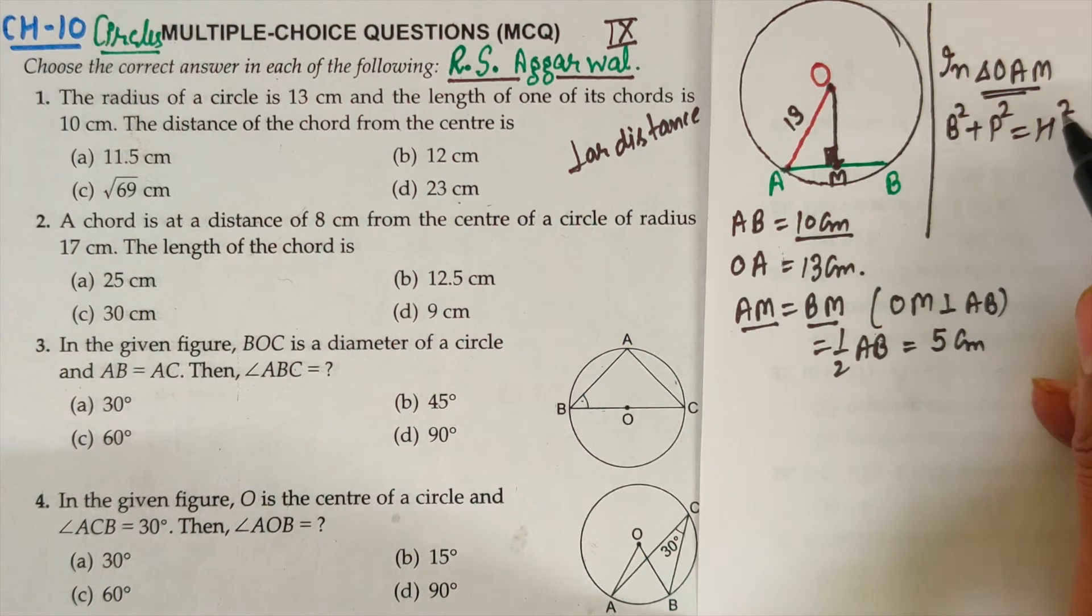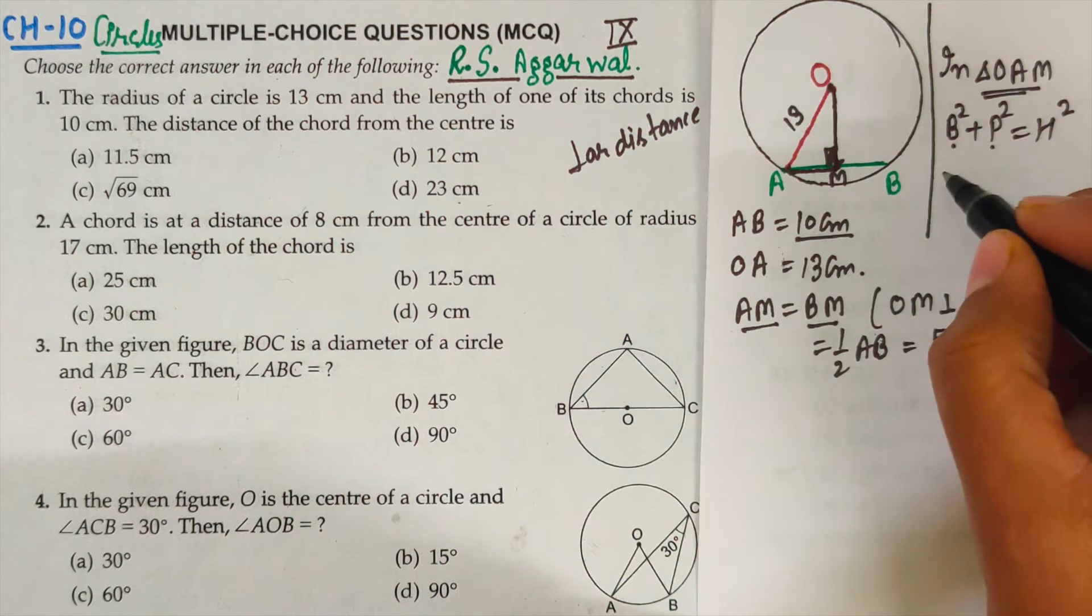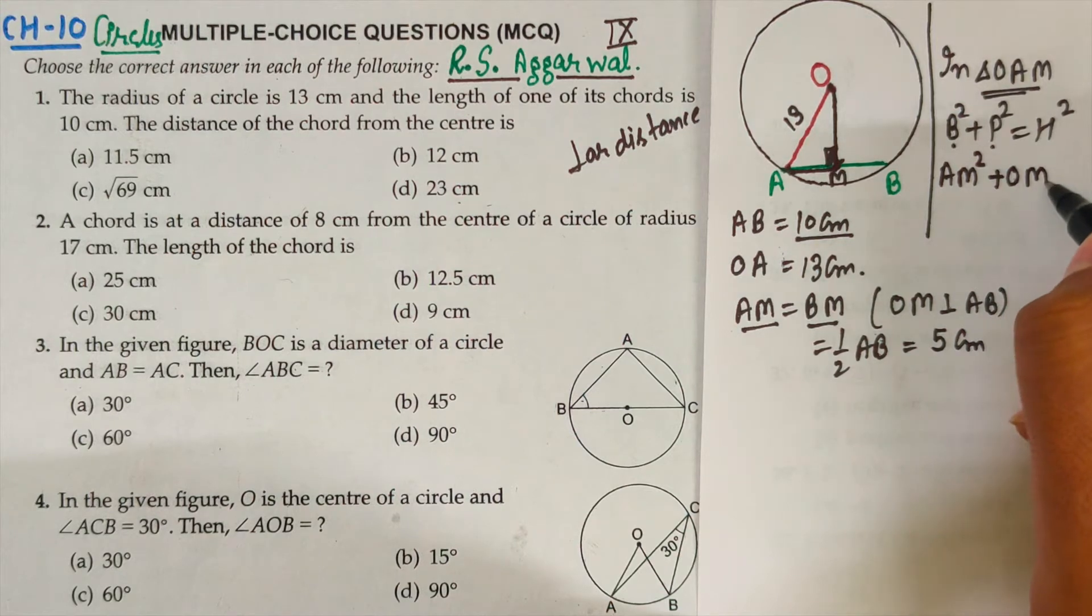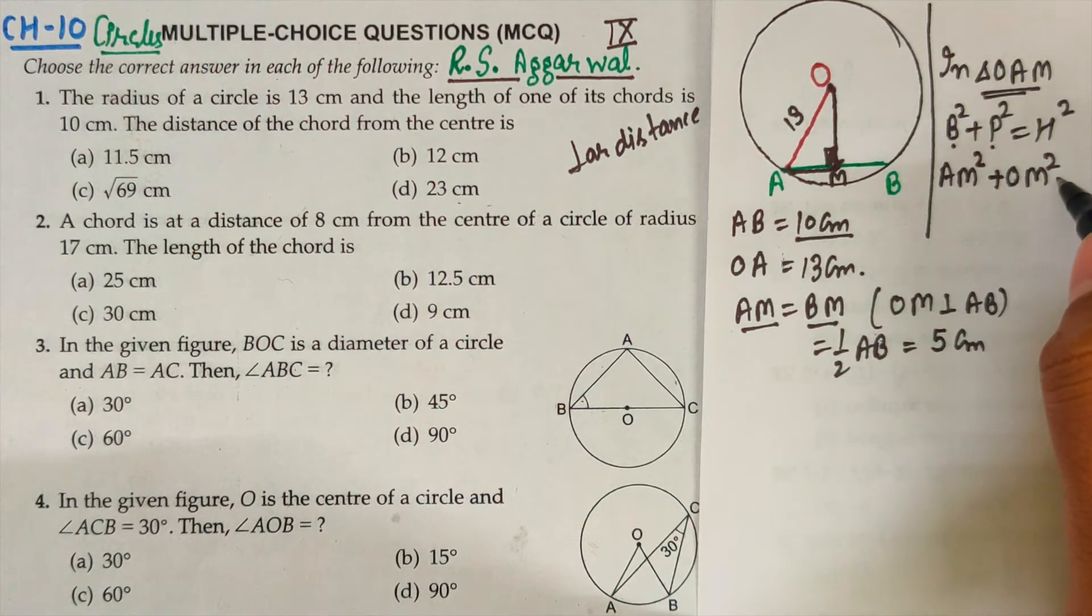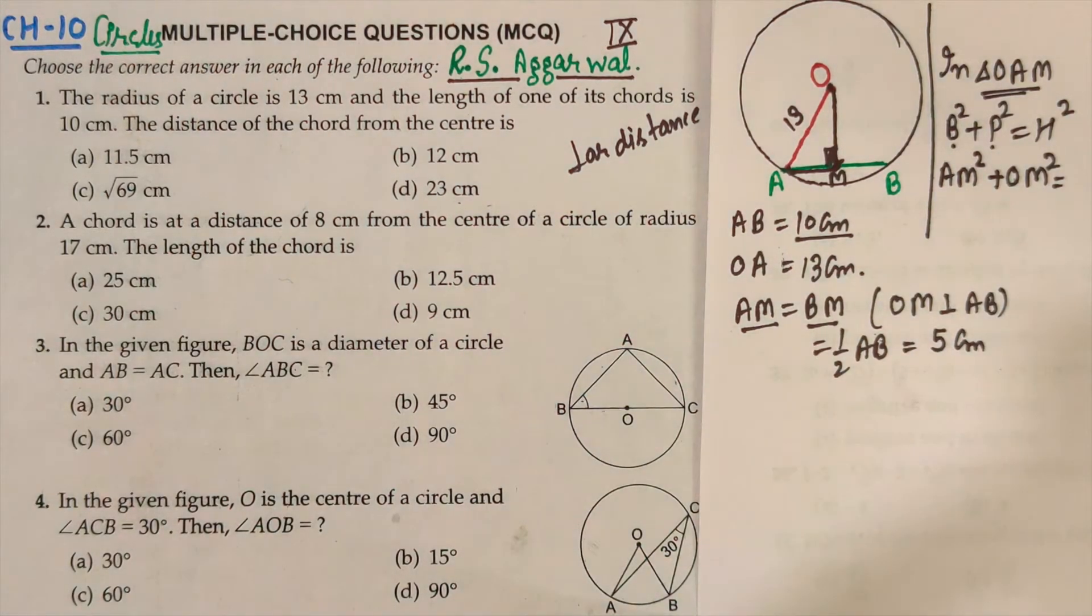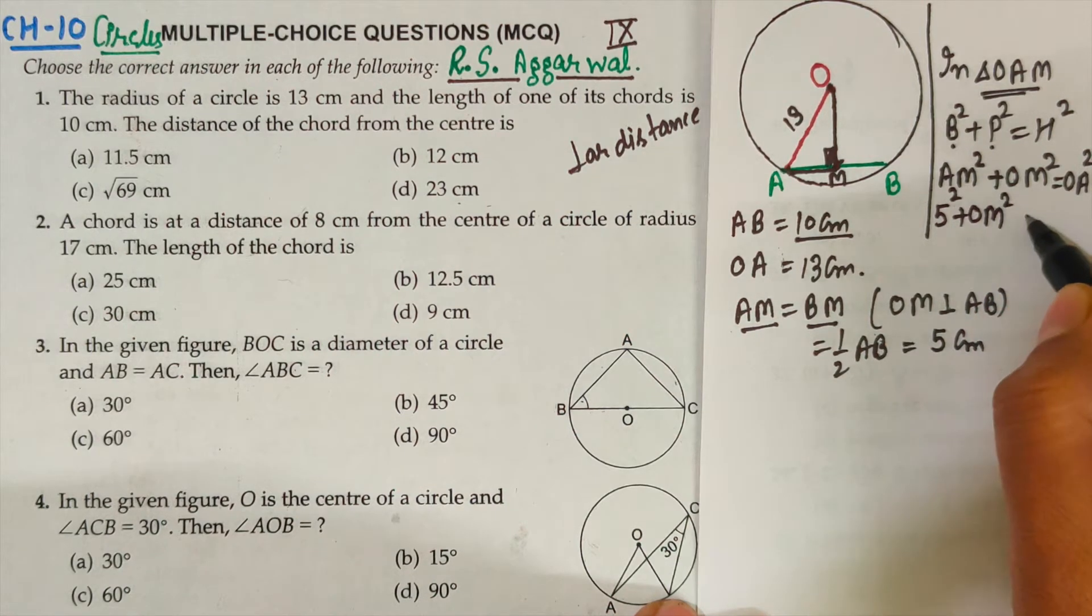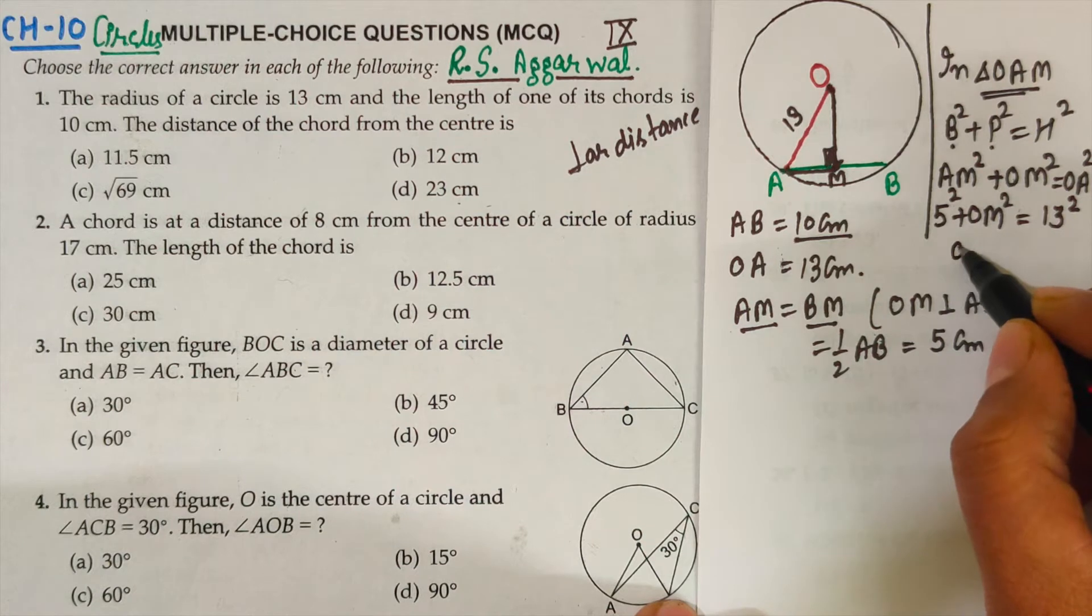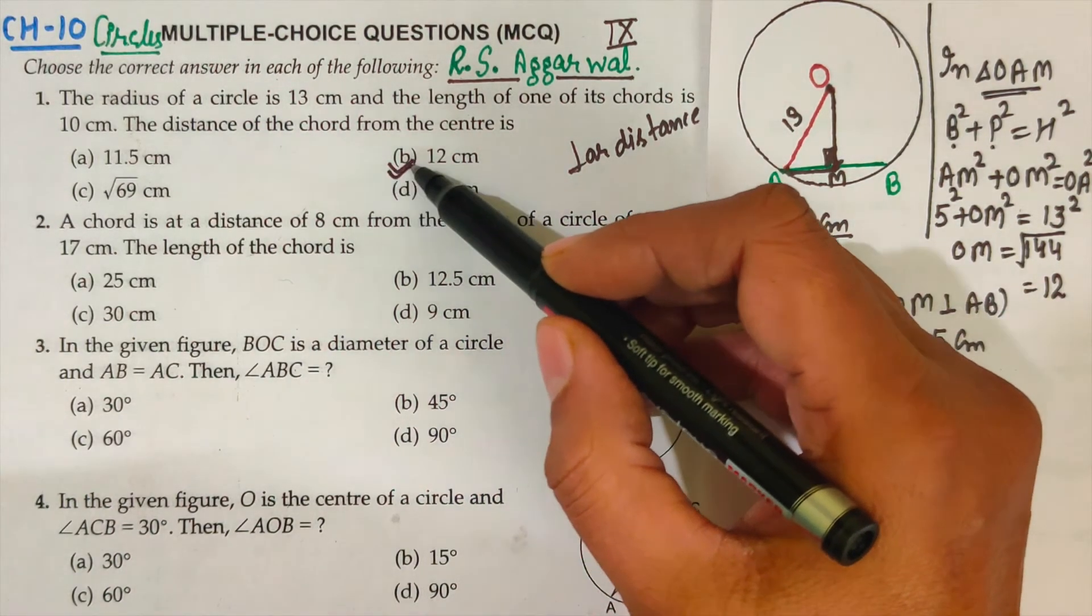So let's use Pythagoras theorem in this triangle OAM. Angle M is 90 degree. This is the statement of Pythagoras theorem: base square plus perpendicular square equals hypotenuse square. The line segments which are forming 90 degree, AM and OM, one is base and another is perpendicular. And hypotenuse is OA. So OM² + AM² = OA². Let's substitute the value: 5 square, OM we want to find out, and OA radius is 13. So OM² = 169 minus 25, that will be 144. So OM is square root of 144, that is 12. So perpendicular distance is 12 centimeter. B option is the correct option.